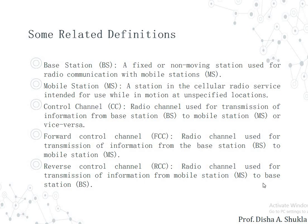The next term is Control Channel — the radio channels used for transmission of information between the base station and the mobile station are called control channels. The Forward Control Channel (FCC) refers to radio channels used for transmission from the base station to the mobile station. The reverse of this, from the mobile station to the base station, is called the Reverse Control Channel.